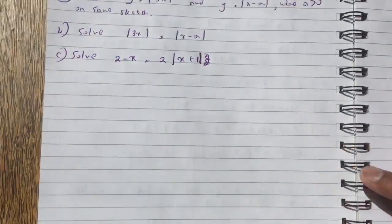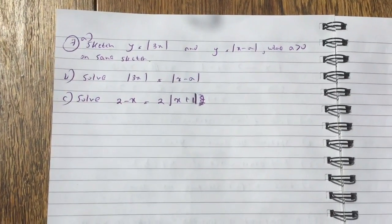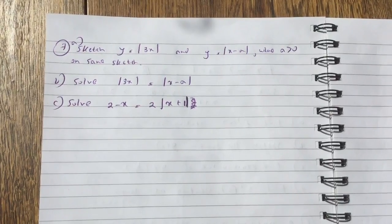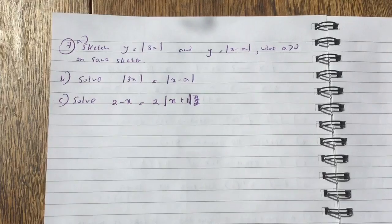Okay, now question 7, part A, sketch y equals modulus of 3x and y equals modulus of x minus a, where a is greater than 0 on the same sketch. Part B, solve modulus of 3x equals modulus of x minus a.